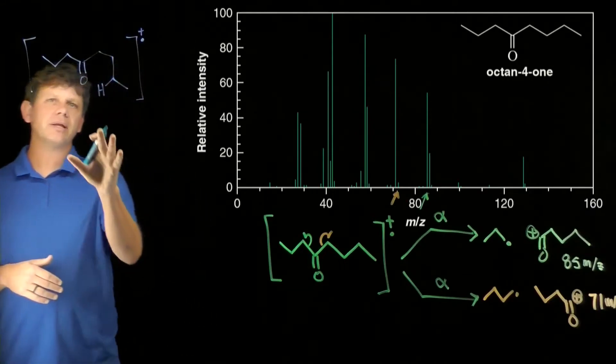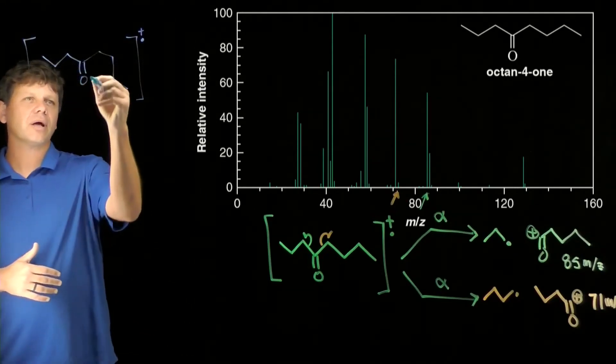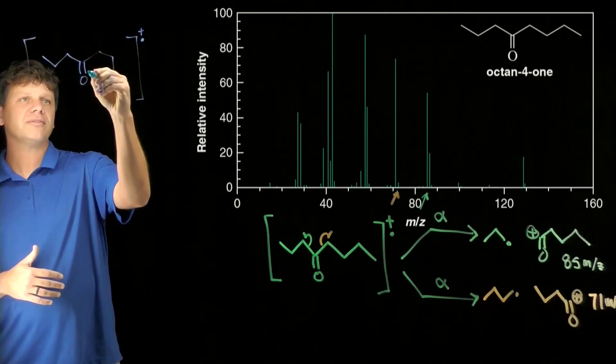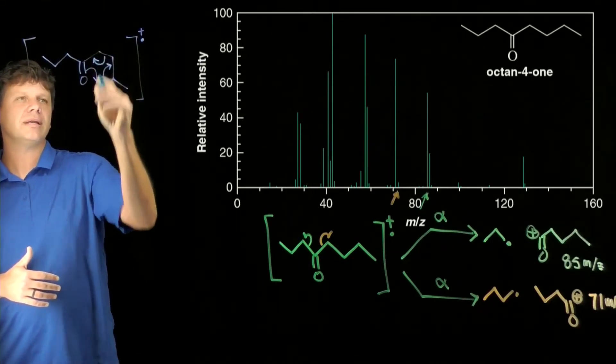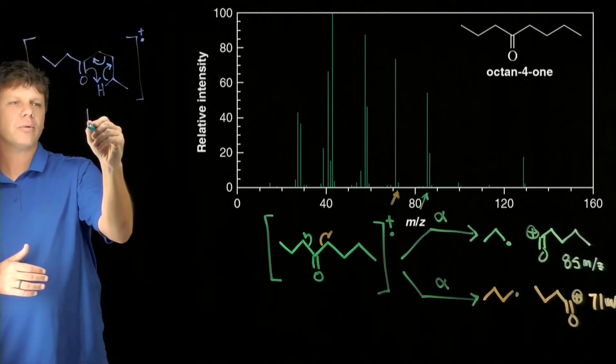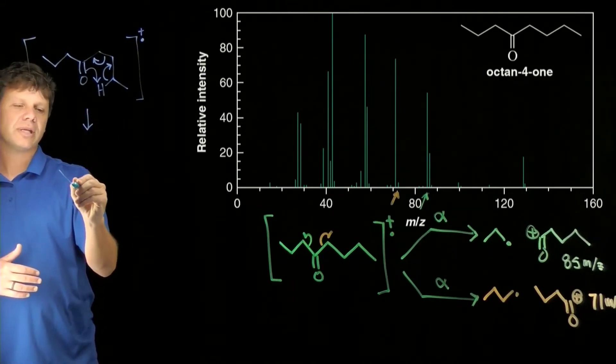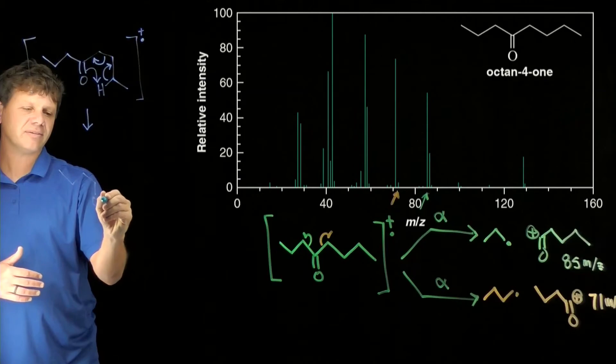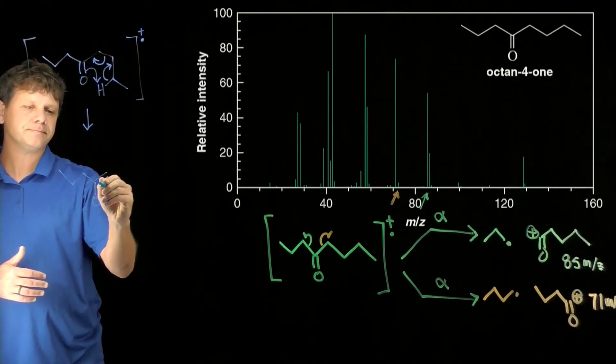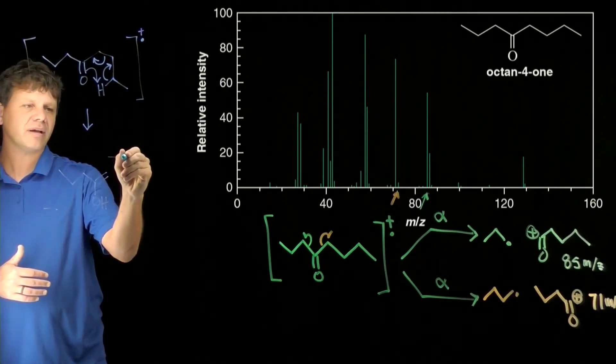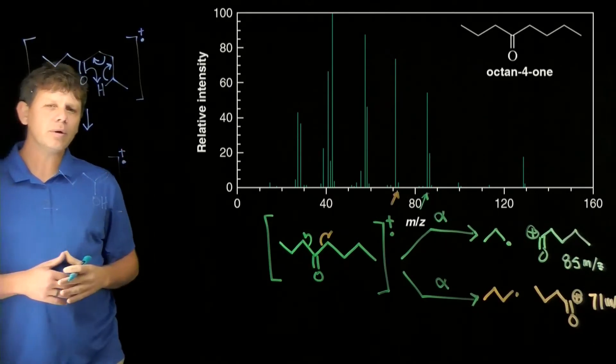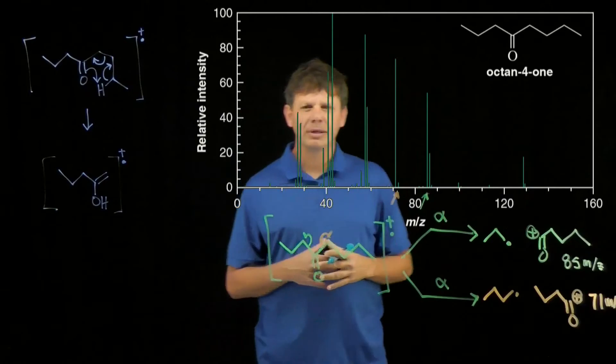We can see then that the McClafferty rearrangement is going to be this six electron cyclic transition state or mechanism where the electrons move in this way. Now if we follow these arrows around, we should end up with this enol. This enol, which is itself a radical cation that would be detected by the mass spectrometer.